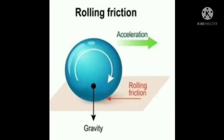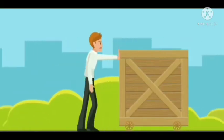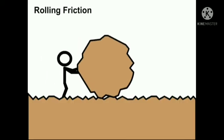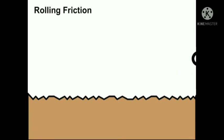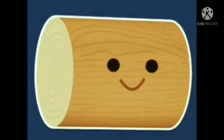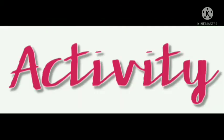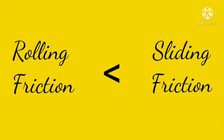The second type is rolling friction. Rolling friction is the opposing force that comes into play when one object is actually rolling over the surface of another object. For example, when a wheel or a log of wood rolls over a flat surface, the opposing force is called rolling friction. Let us perform an activity to show that rolling friction is less than sliding friction in magnitude.